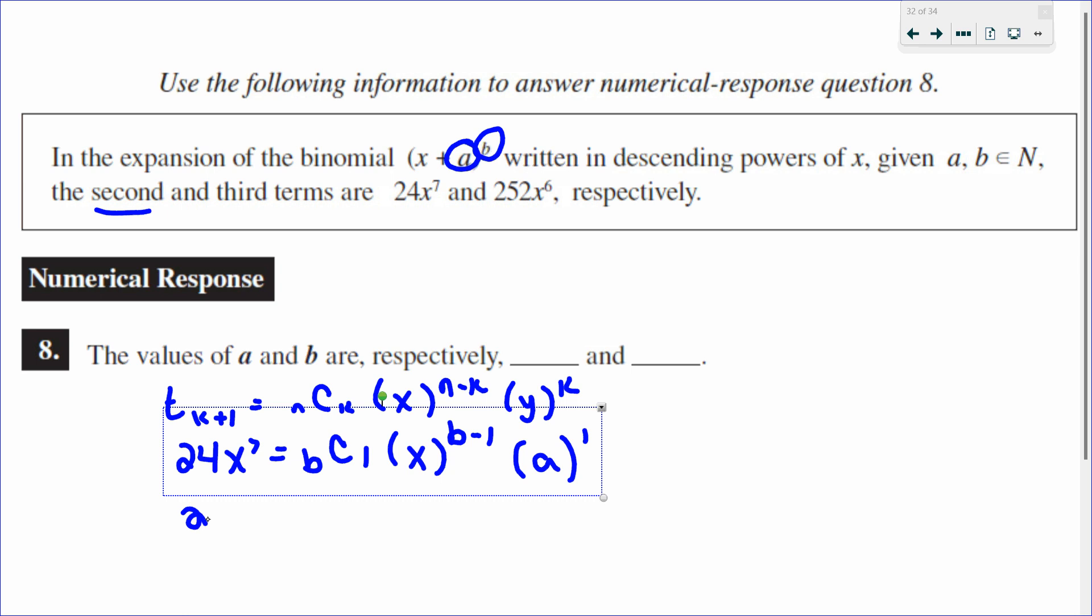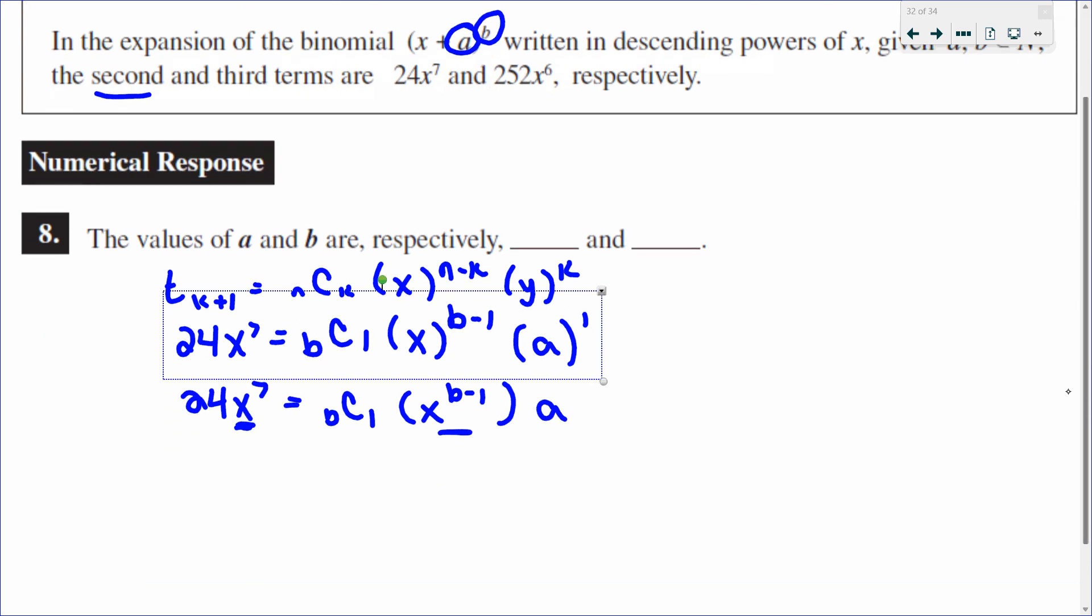Tidying this up, I have 24x^7 = bC1 * x^(b-1) * a. Looking at the x values, this is x^7, this is x^(b-1). I know that 7 must be the same exponent as b minus 1. Add 1 to both sides tells me b is 8. So that's my first piece.